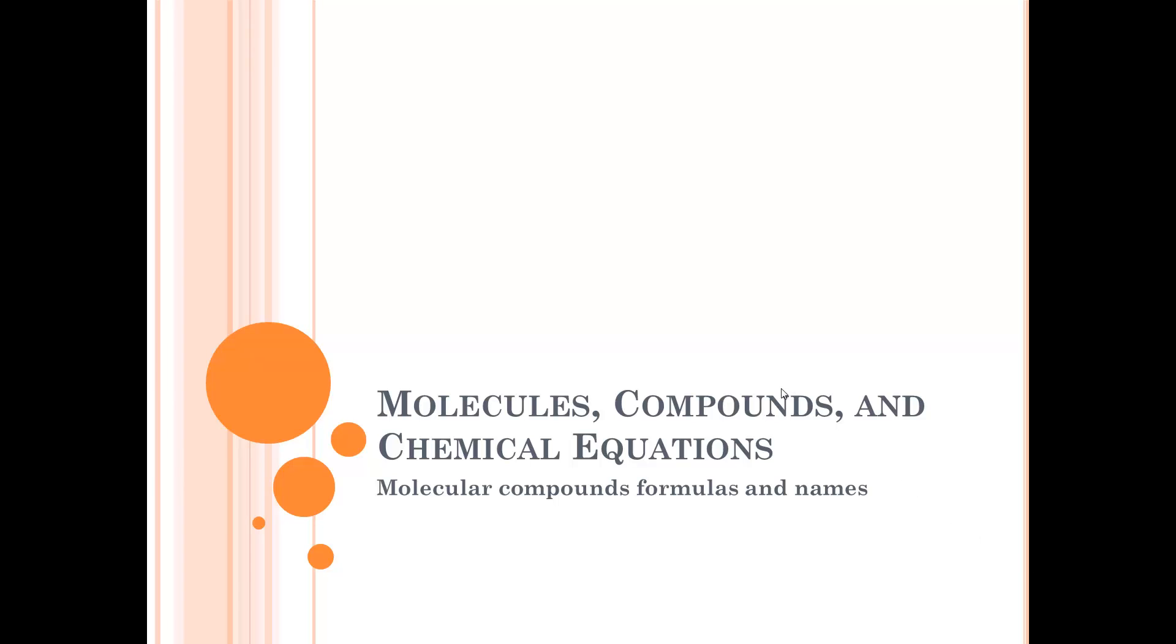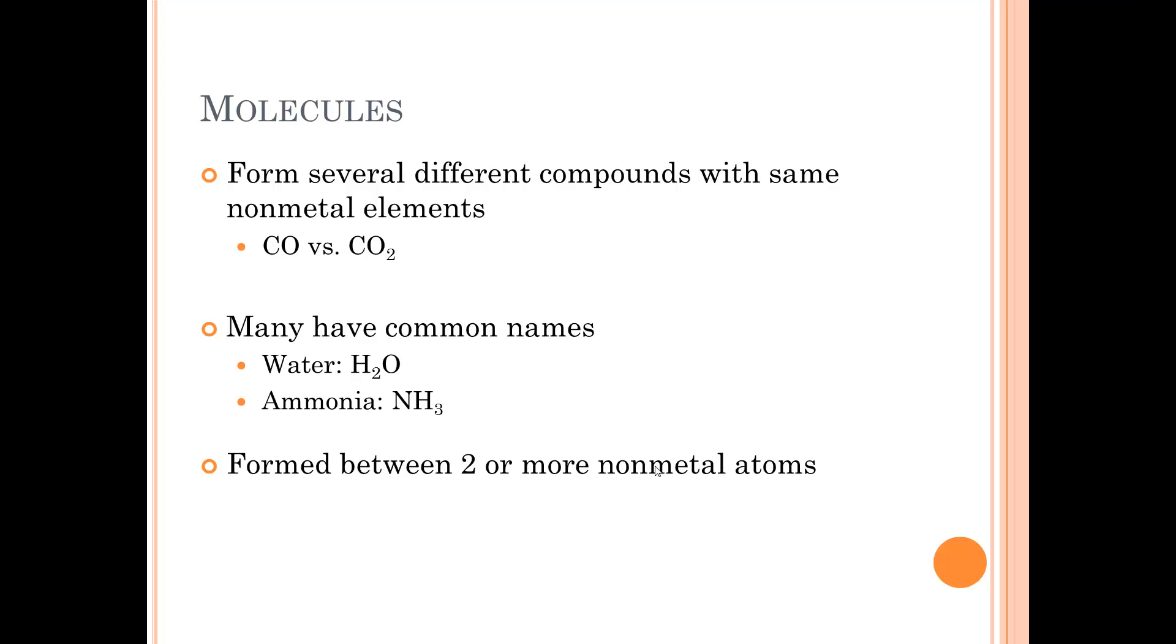In this tutorial, we will be discussing molecular compounds, formulas, and names. Molecules form several different compounds with the same non-metal elements. For instance, carbon monoxide versus carbon dioxide. They both have carbon and oxygen, but the ratios between the carbons and the oxygens are different. Many have common names such as water is H2O and ammonia is NH3. They are formed between two or more non-metal atoms.